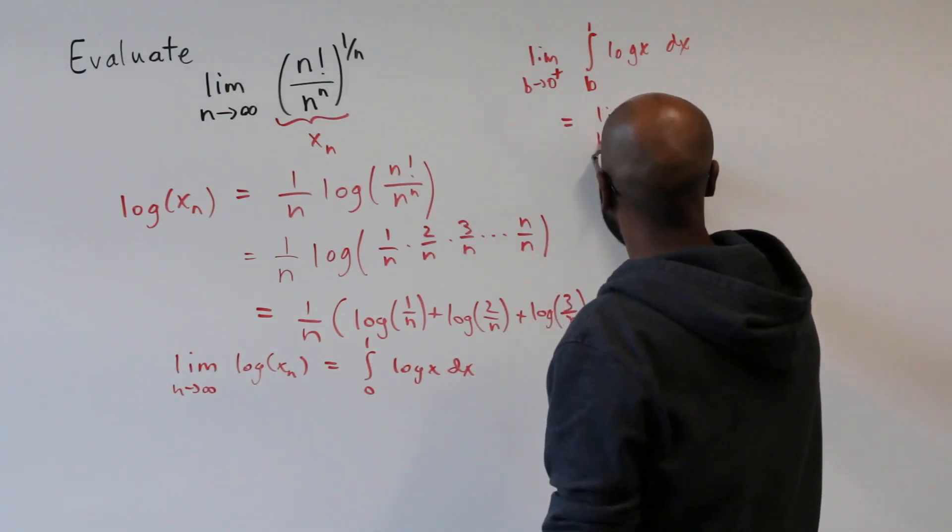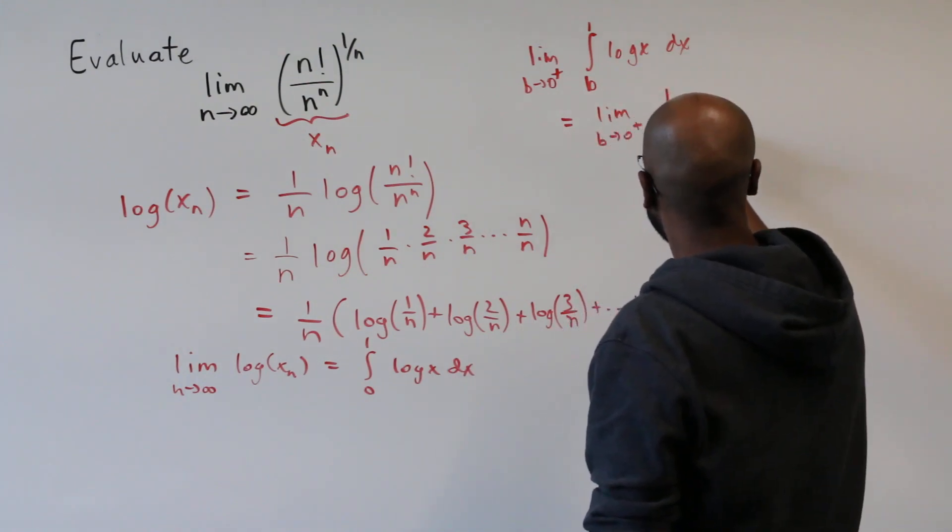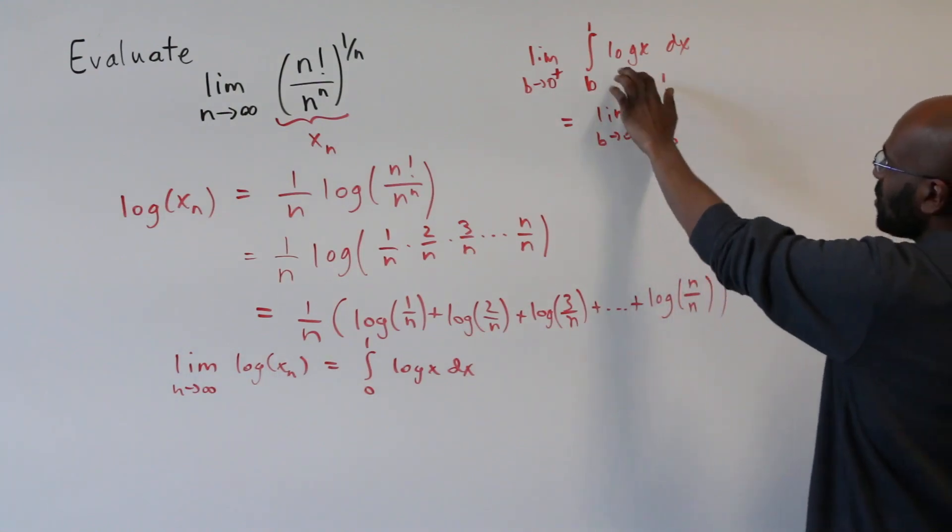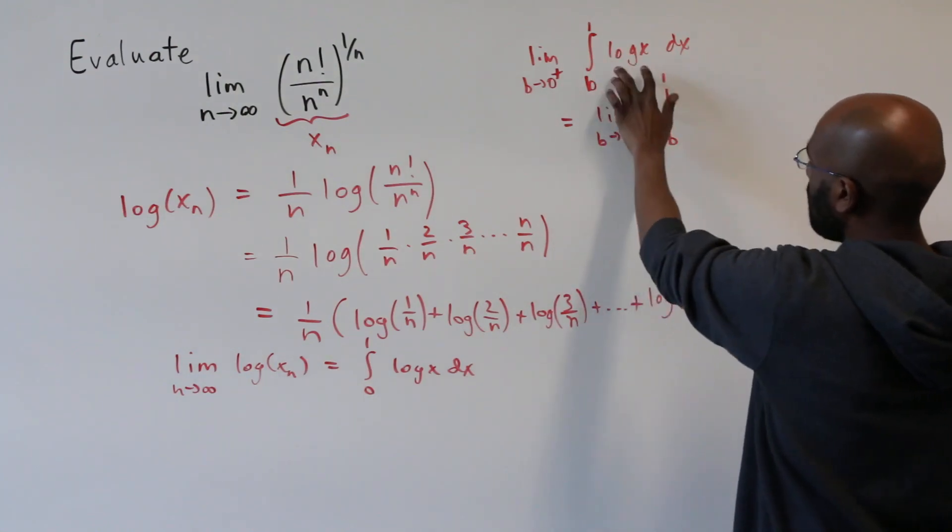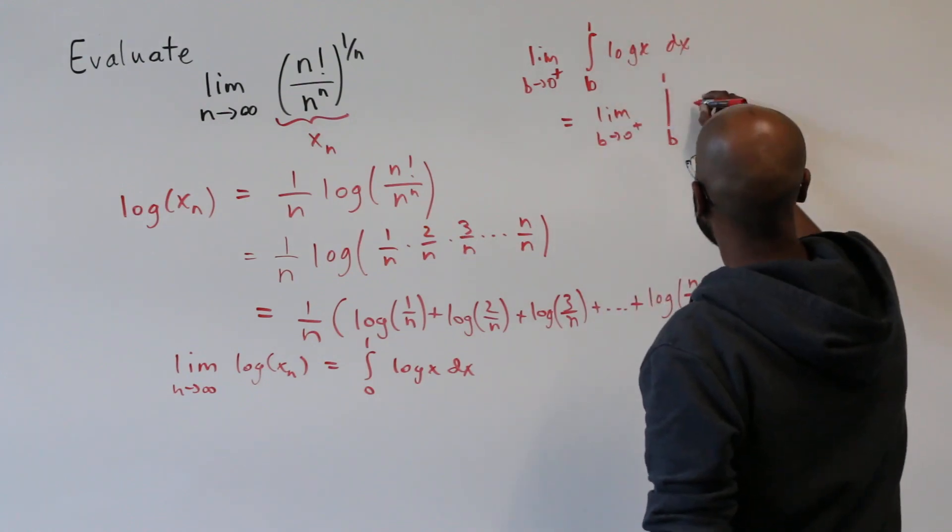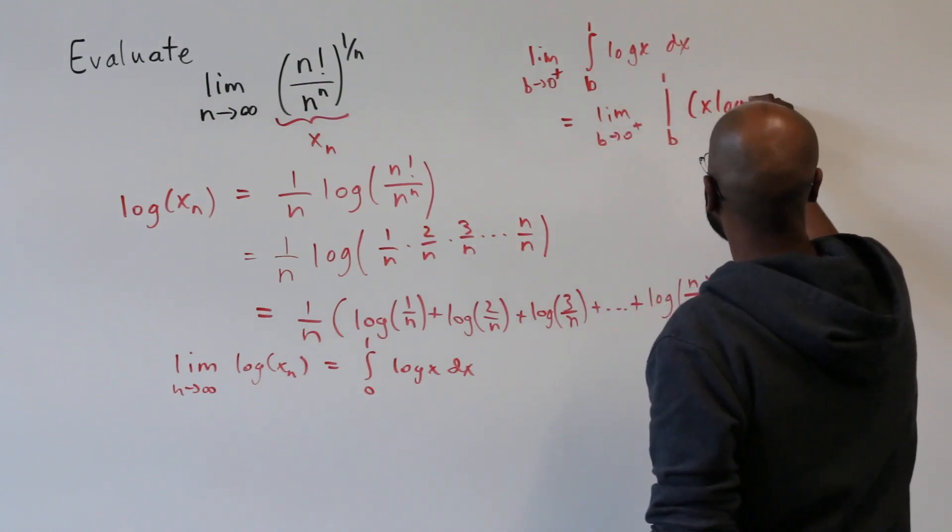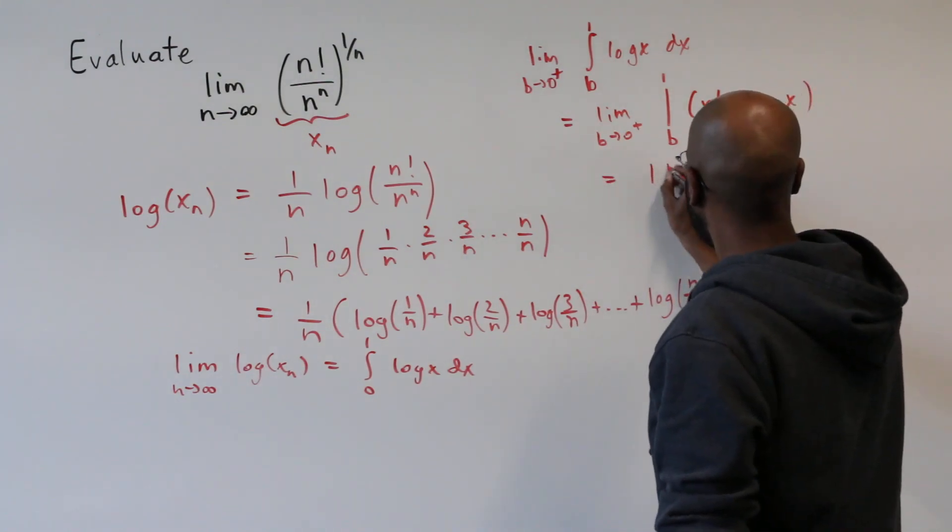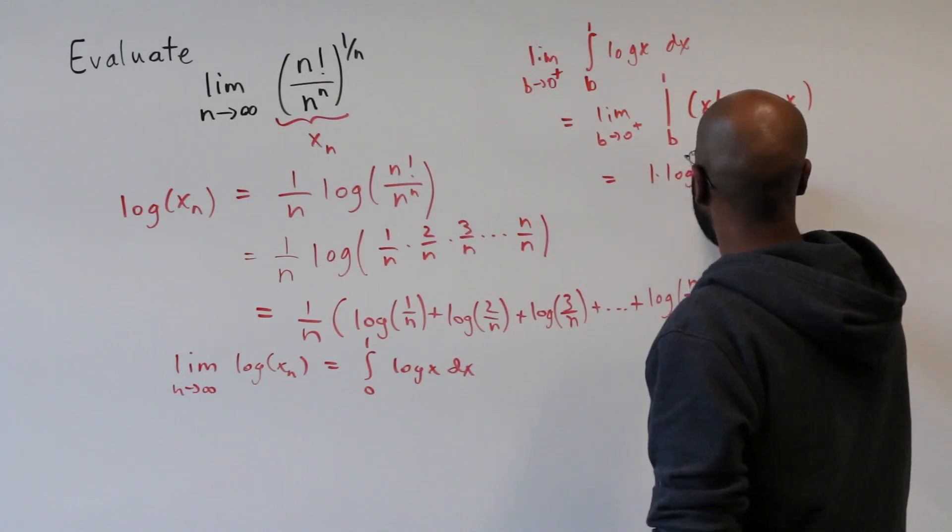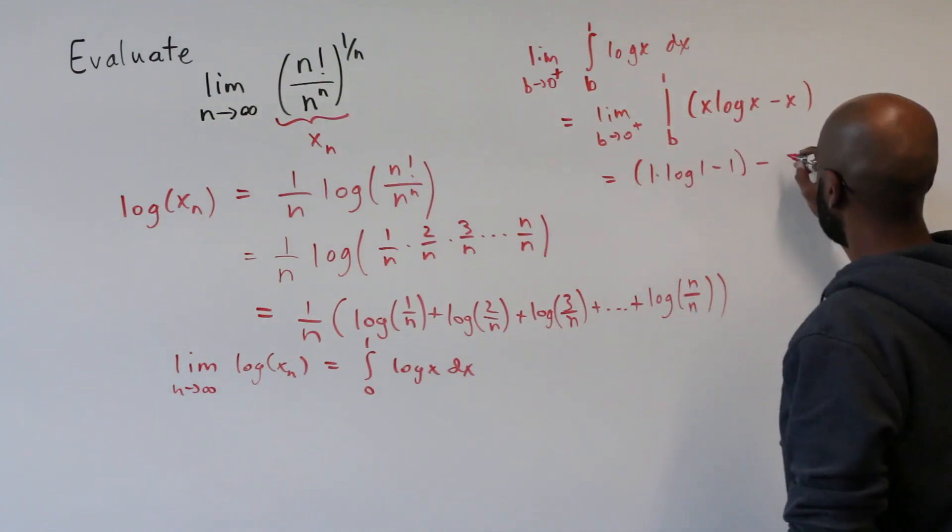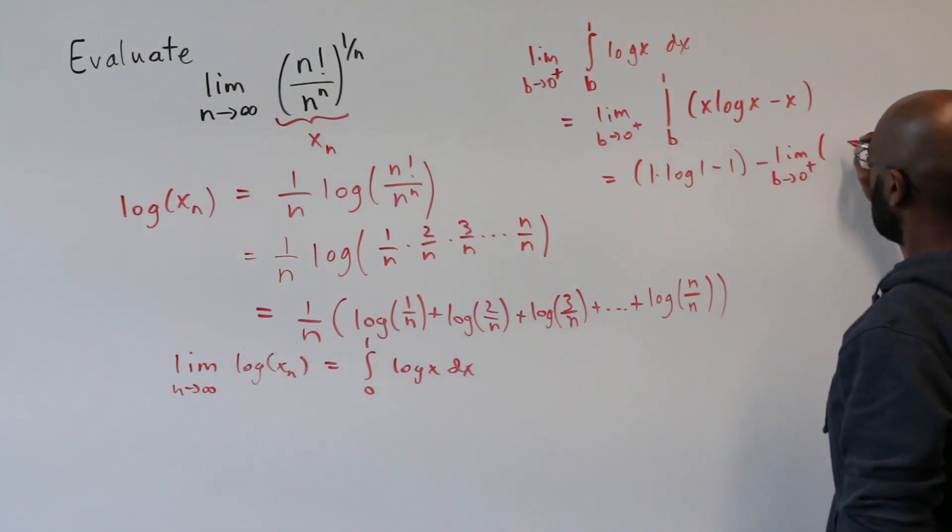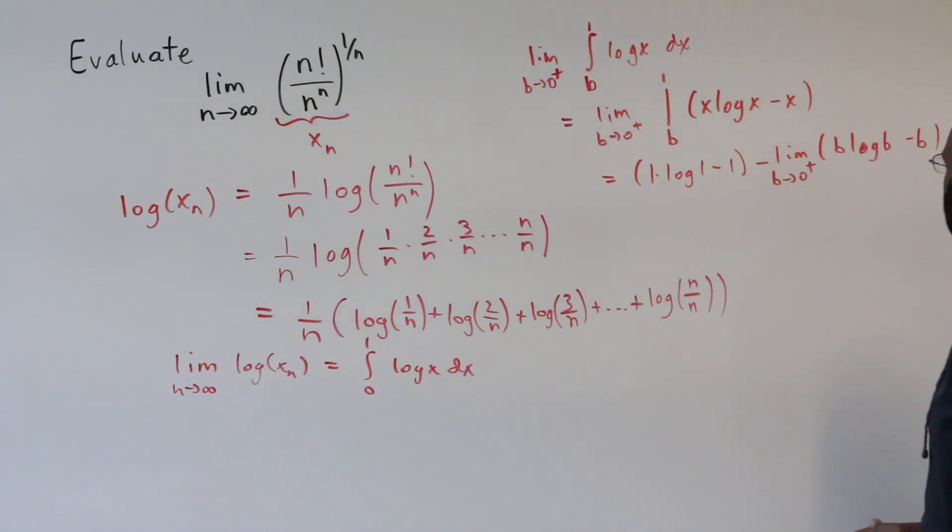Okay, so this is the limit as b approaches 0 from the right of the value from b to 1 of the antiderivative of this, which is x log x minus x, which you can do by parts. And so we'll get something like 1 times logarithm of 1 minus 1, minus, and then we have the limit as b approaches 0 from the right, of b log b minus b.